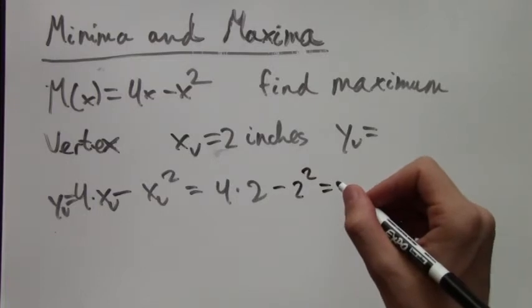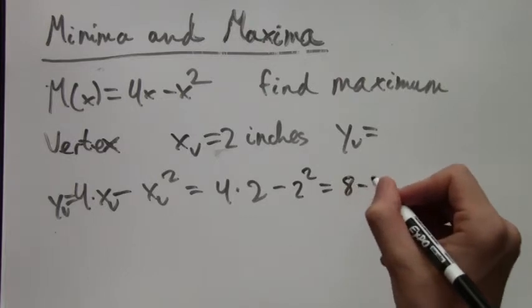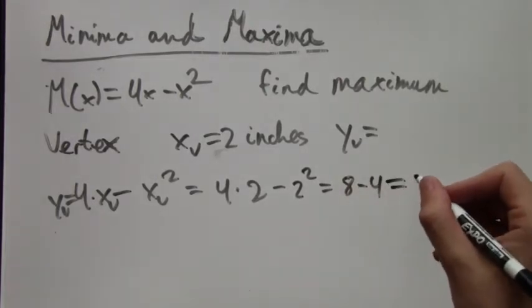8 minus 4 equals 4. And remember, this is in millions.